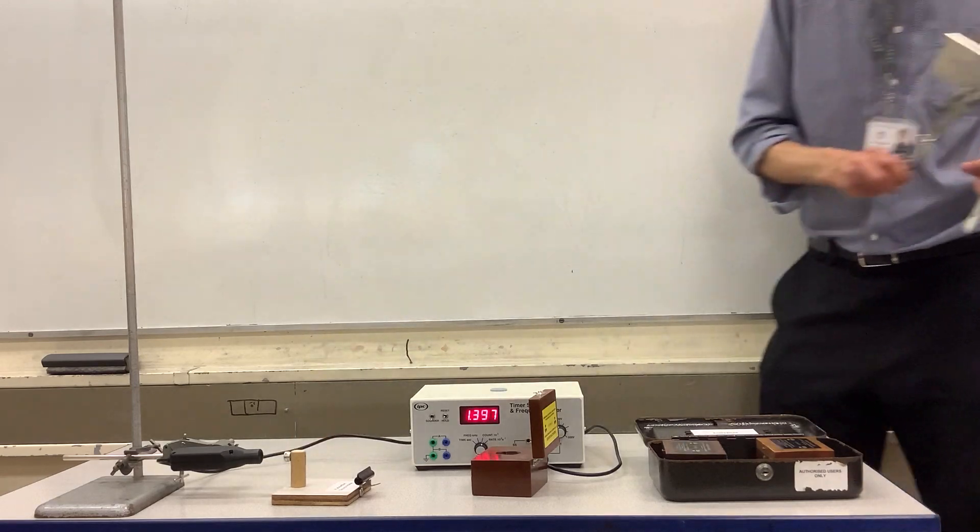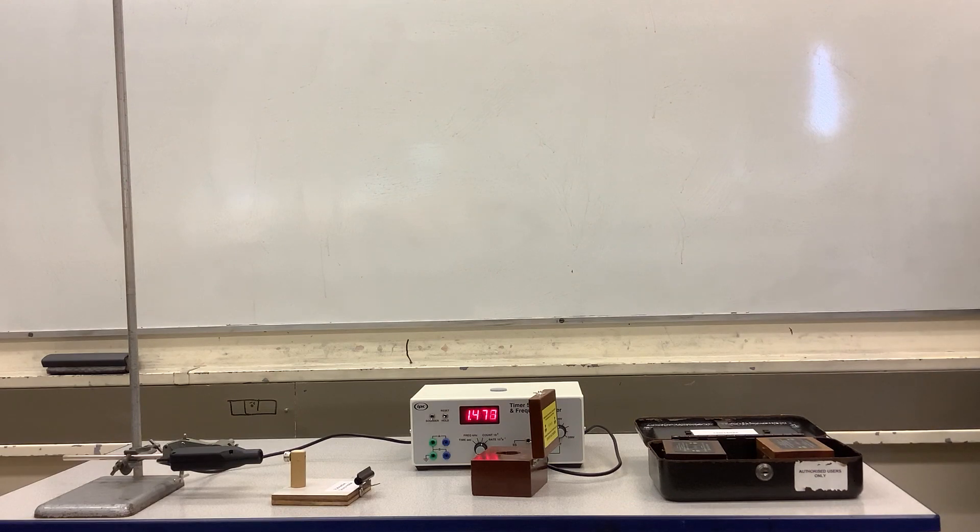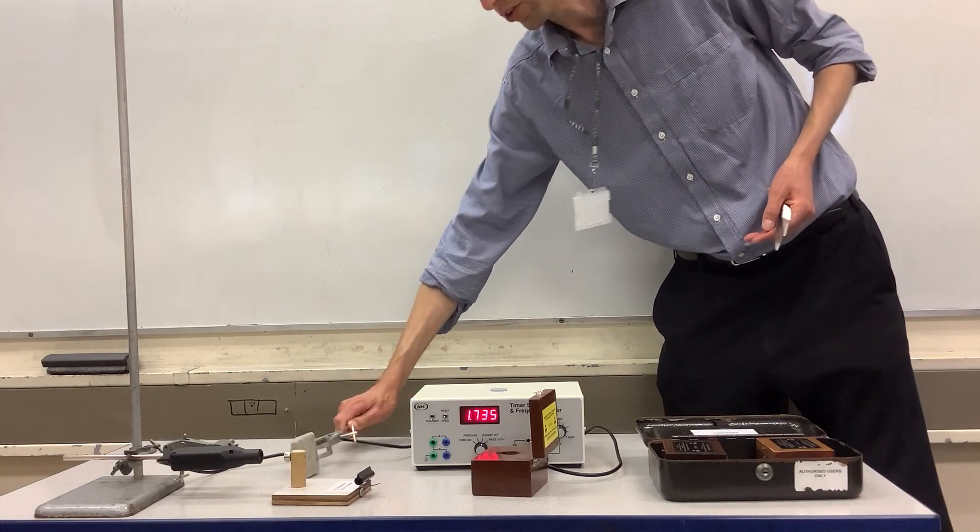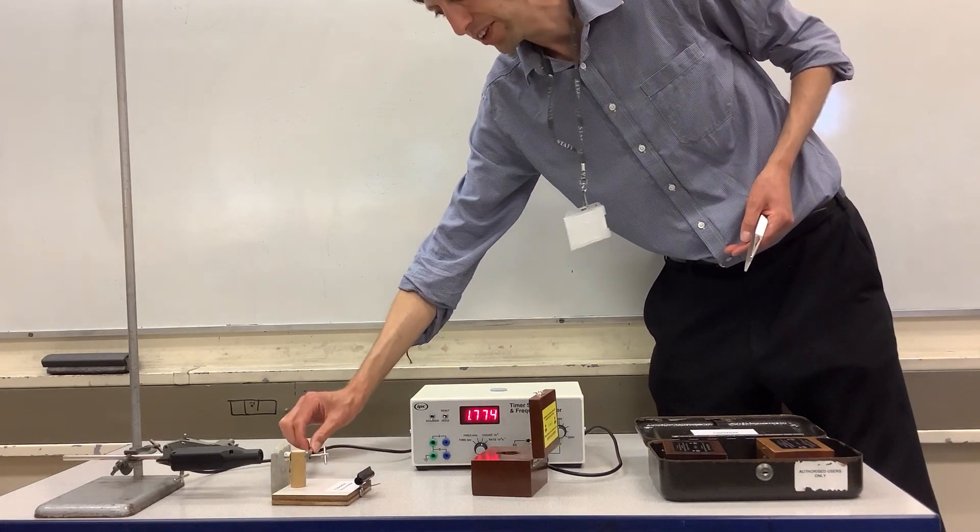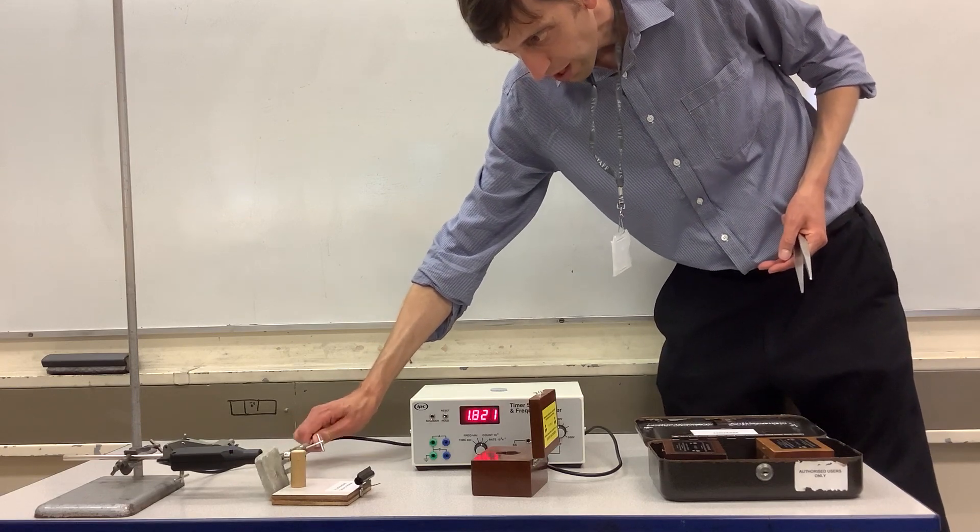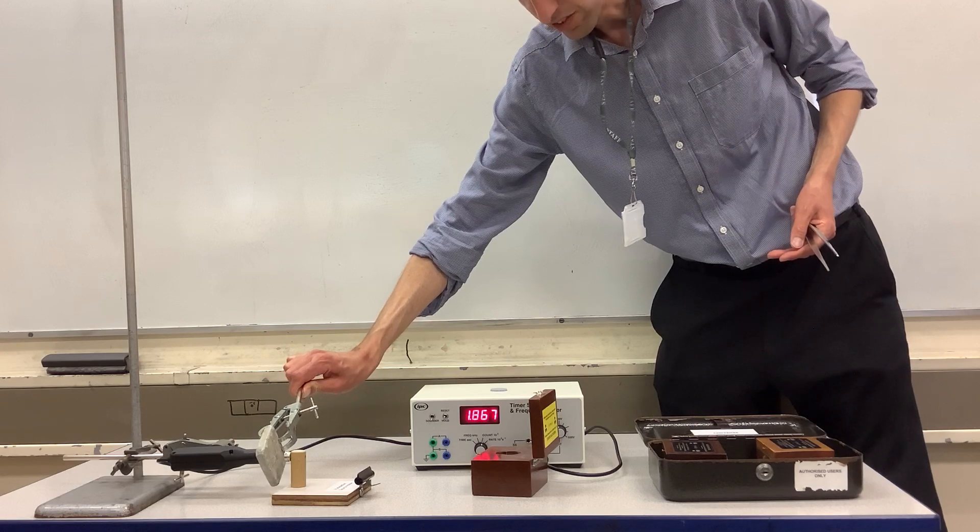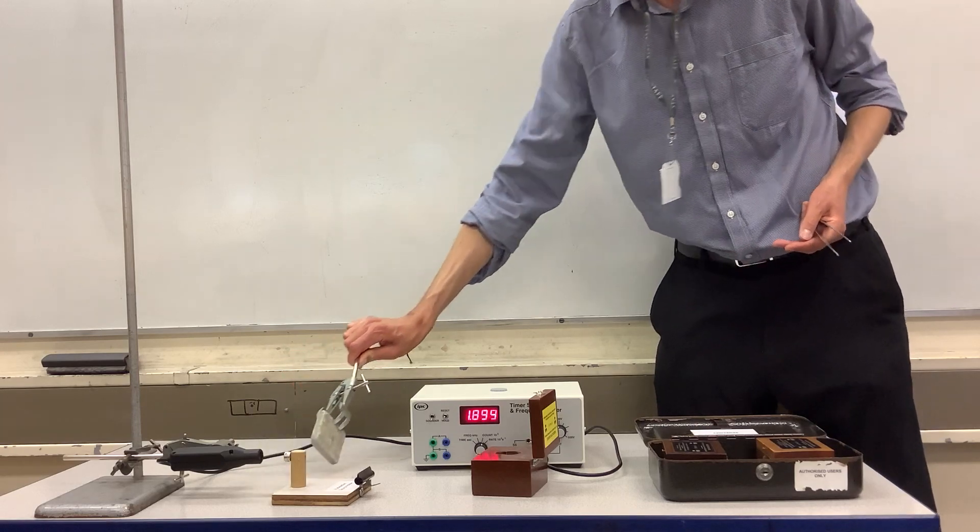Clearly gamma radiation has high penetrating power. What could we try that is more dense than aluminium? Let's try a really thick piece of lead. Here we've got well over a centimeter of lead, and if we put that in, even over a centimeter of lead is not stopping very much of the gamma radiation.